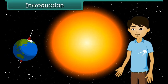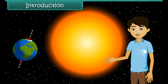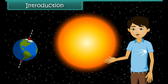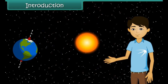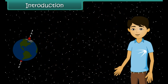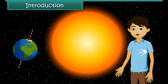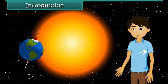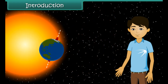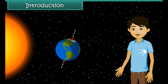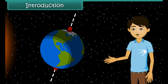Hello students, can you imagine how cold the earth would be if there were no sun? The sun is the earth's main source of heat. Only a little of the sun's heat reaches the earth; however, this is enough for life to exist on earth.